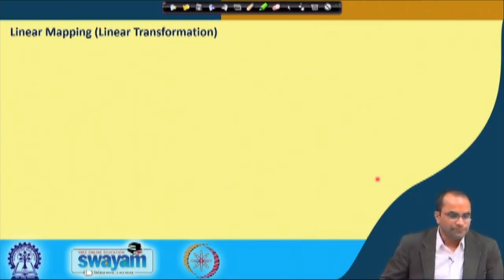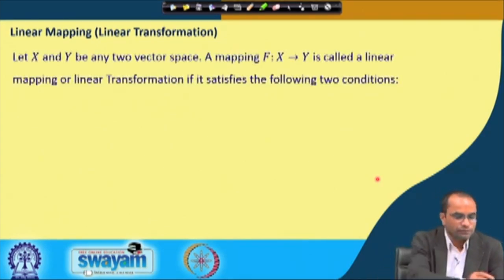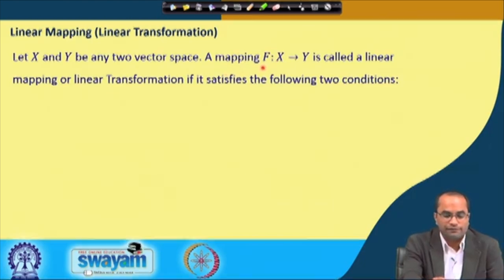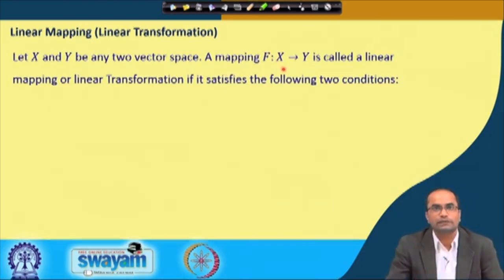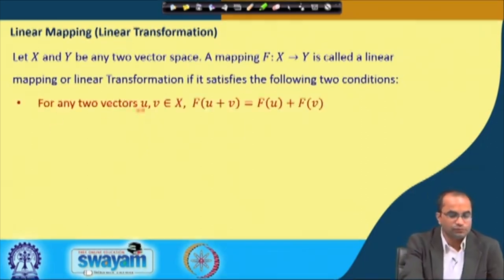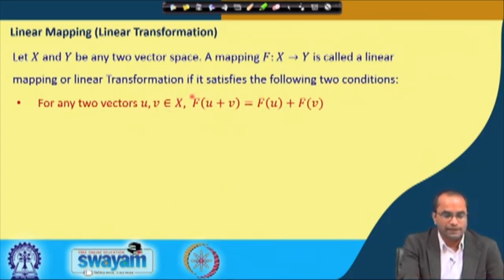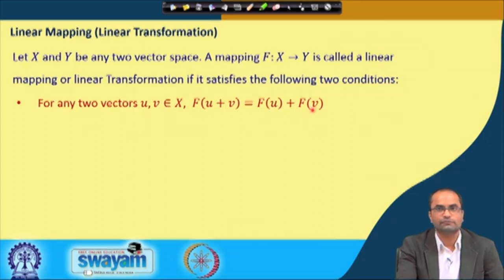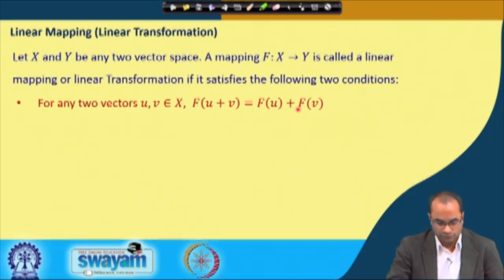Let me start with what is a linear mapping or linear transformation. Here we talk about two vector spaces. Let X and Y be two vector spaces. The mapping F from X to Y is called a linear transformation or linear mapping if it satisfies the following two conditions. For any two vectors U and V from vector space X, if we apply this transformation F on U plus V, this should be equal to F(U) plus F(V).